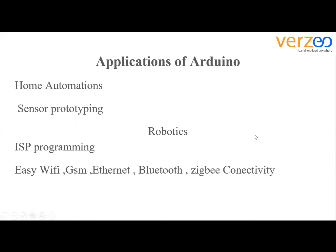We were speaking about the applications of Arduino — specifically how Arduino can be used in home automation. For example, if you have an AC, fridge, or microwave that you need to control from home and there is nothing inbuilt in these devices, you need some external hardware and you need to program that hardware accordingly so that you can control your devices at home. There is a system and you need to use an Android app.